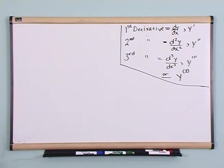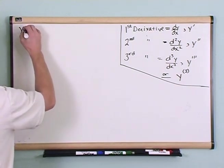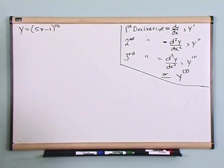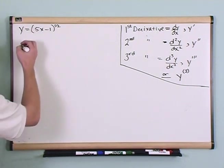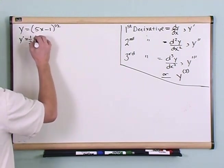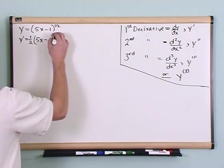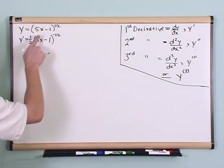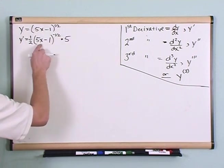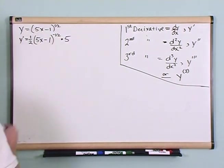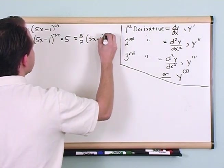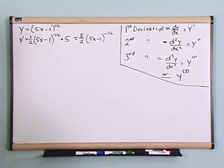Let's do one more problem. If you have y equal to (5x minus 1) to the 1/2, find the third derivative. Let's find the first derivative first. We're going to use the chain rule: 1/2 comes out, inside stays the same, exponent becomes negative 1/2, and we multiply by the derivative of the inside which is 5. So the first derivative simplifies to 5/2 times (5x minus 1) to the negative 1/2.